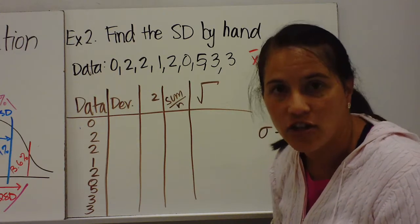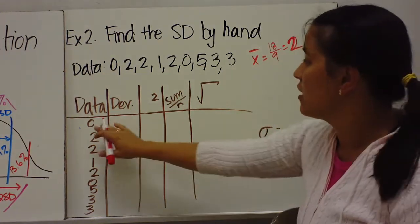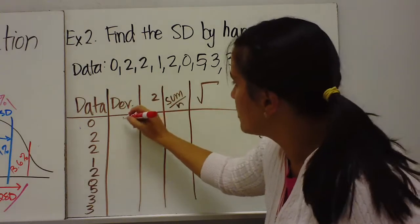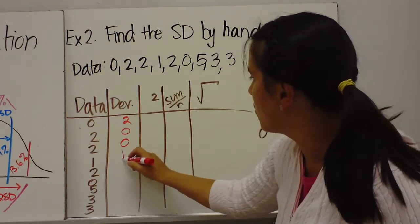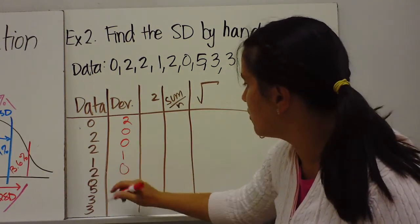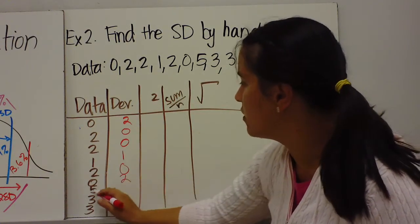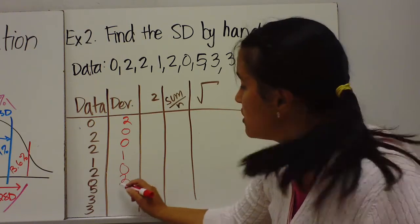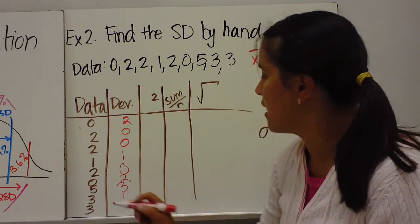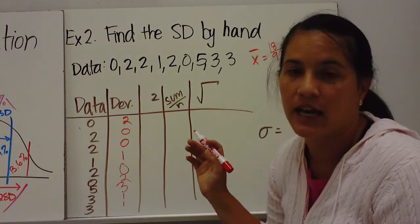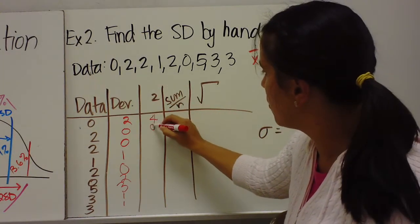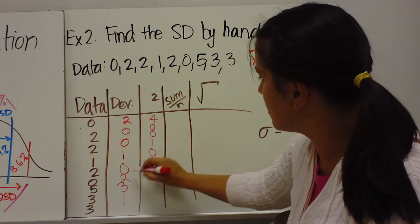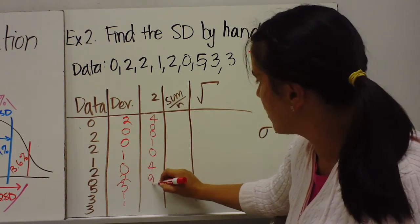Step two: find the deviation from each data value. 2−2=0, 2−2=0, 1−2=1 (kept positive), 2−2=0, 5−2=3, 3−2=1, 3−2=1. Step three: square the deviations: 0, 0, 1, 0, 9, 1, 1 — and including the full data set values: 4, 0, 0, 1, 1, 0, 4, 9, 1, 1.